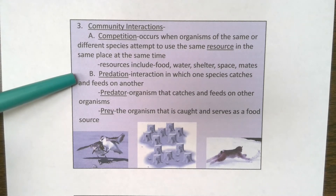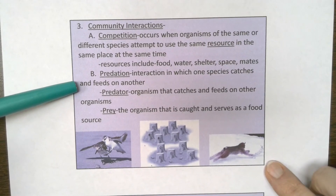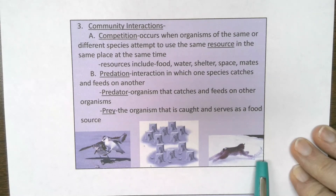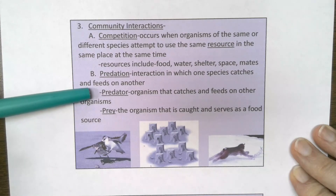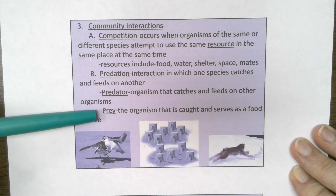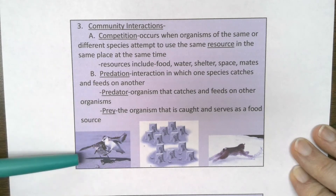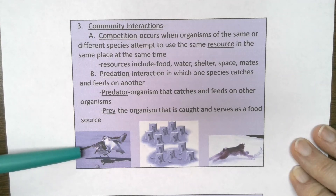Predation is an interaction where one species catches and feeds on another. There's a good example in the picture of a predator — the lynx — hunting the snowshoe hare. Not all predators chase; some are sit-and-wait predators, like a snake that strikes as a mouse walks across its path, while others actively hunt. By definition, the predator is the organism that catches and feeds on the other, and the prey is the organism that's caught and serves as the food source.